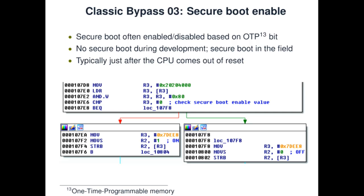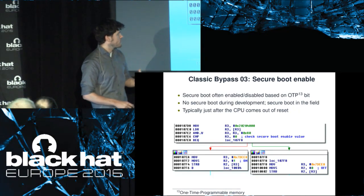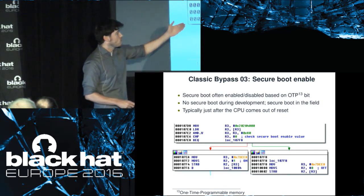Our final classic bypass is the secure boot enable. Typically, secure boot is often enabled or disabled based on a bit in OTP — one-time programmable memory. This means developers can disable secure boot during development and enable it in the field. Typically just after the CPU comes out of reset, a value is read from OTP, and depending on that value, integrity checking and decryption are either turned on or completely disabled. This sounds like a prime example for fault injection.